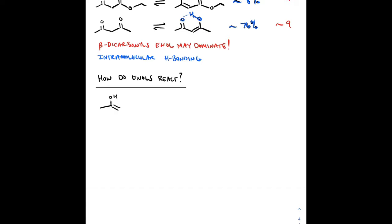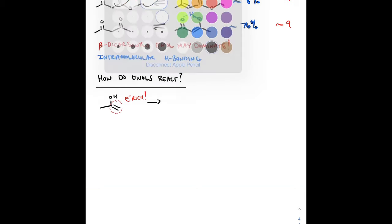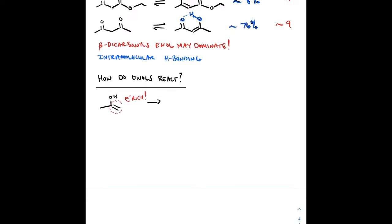So what can we do with these enols? Once we have them, we have an electron-rich species. If we ignore the OH on the enol structure, it just looks like a normal alkene. As we know from last semester, alkenes are nucleophiles and react with electrophiles — and that's exactly what enols do.